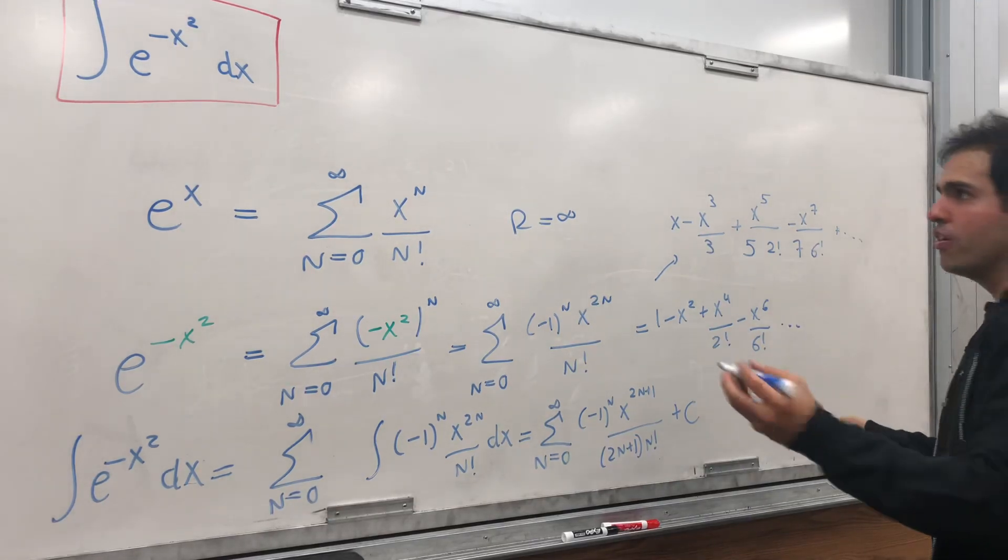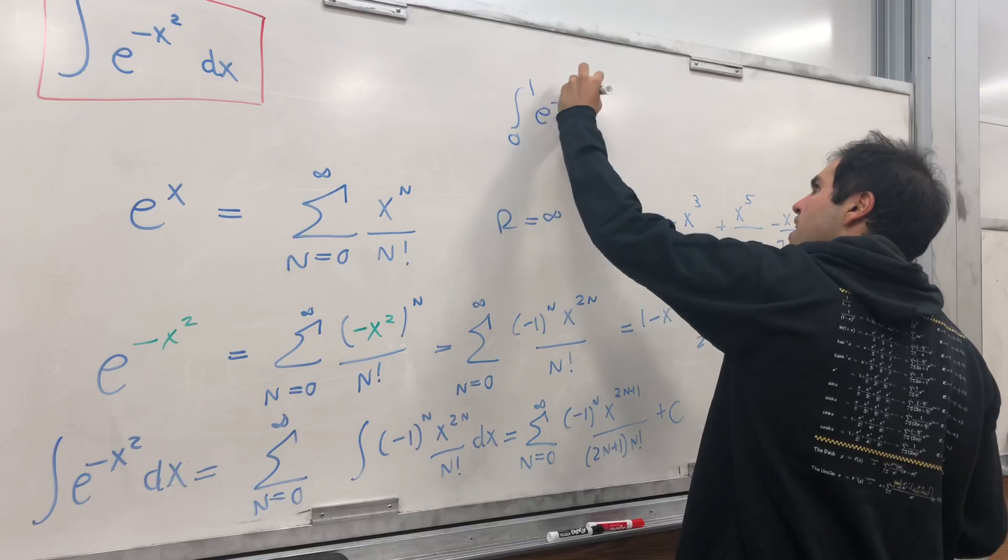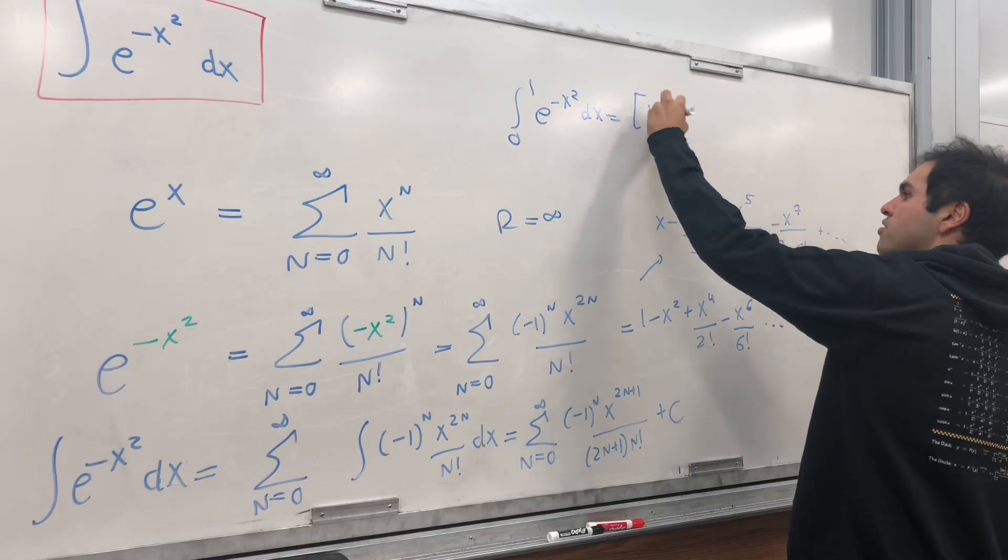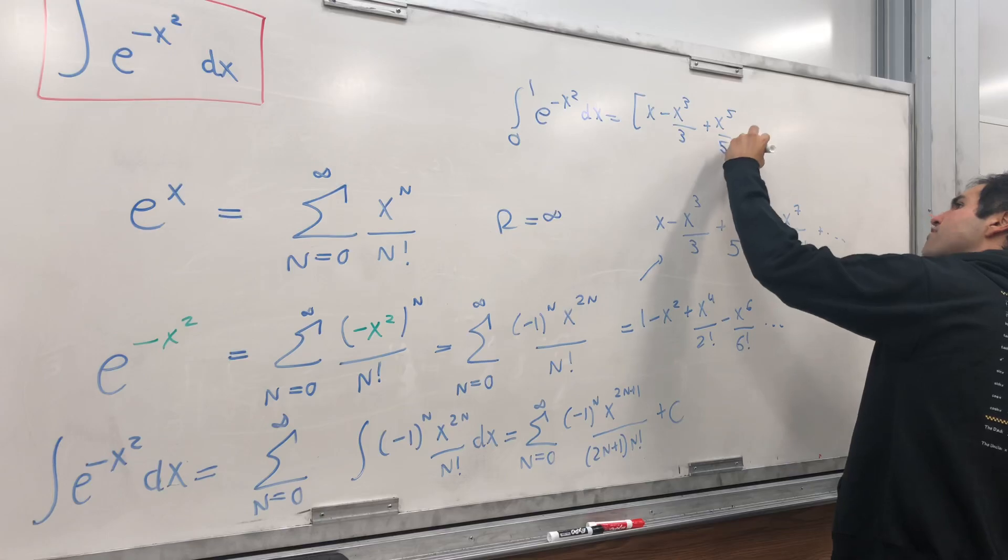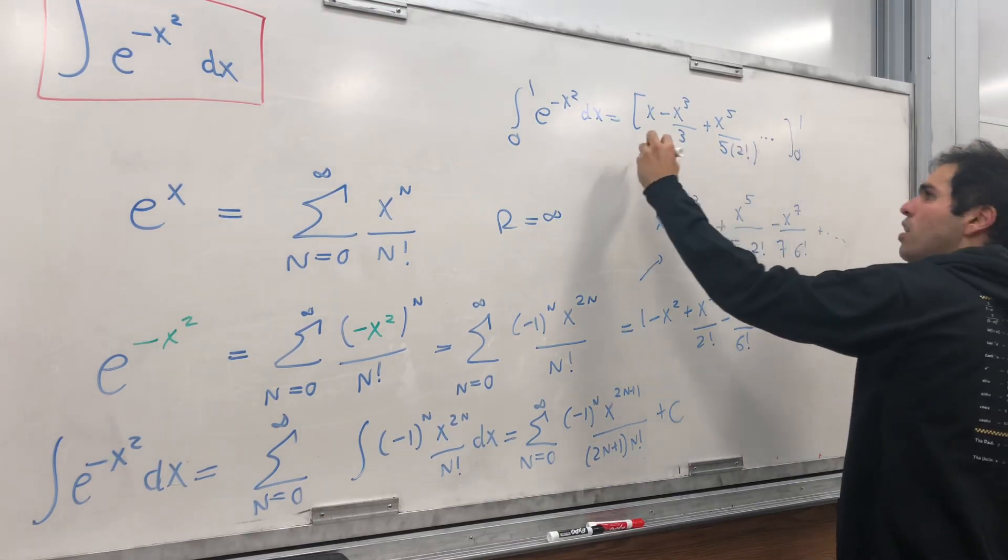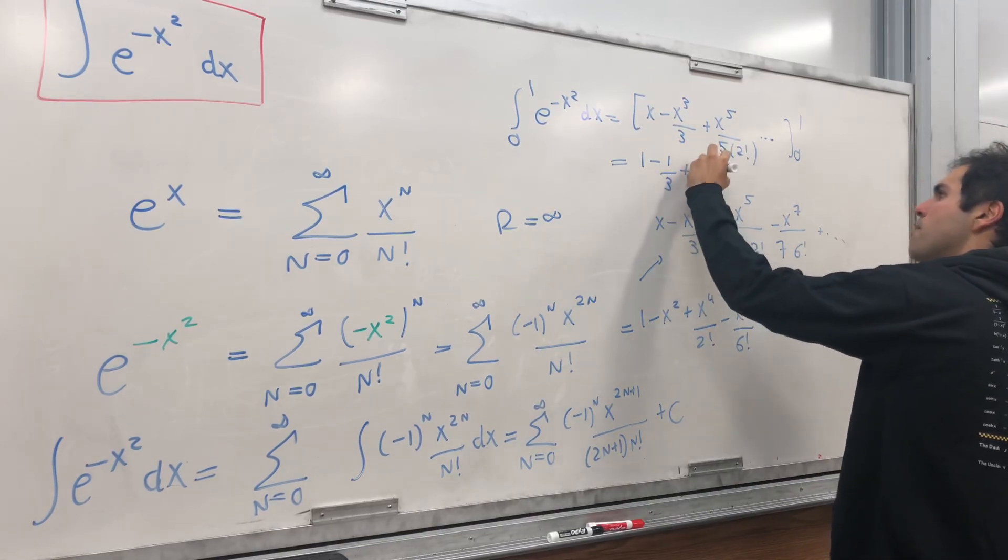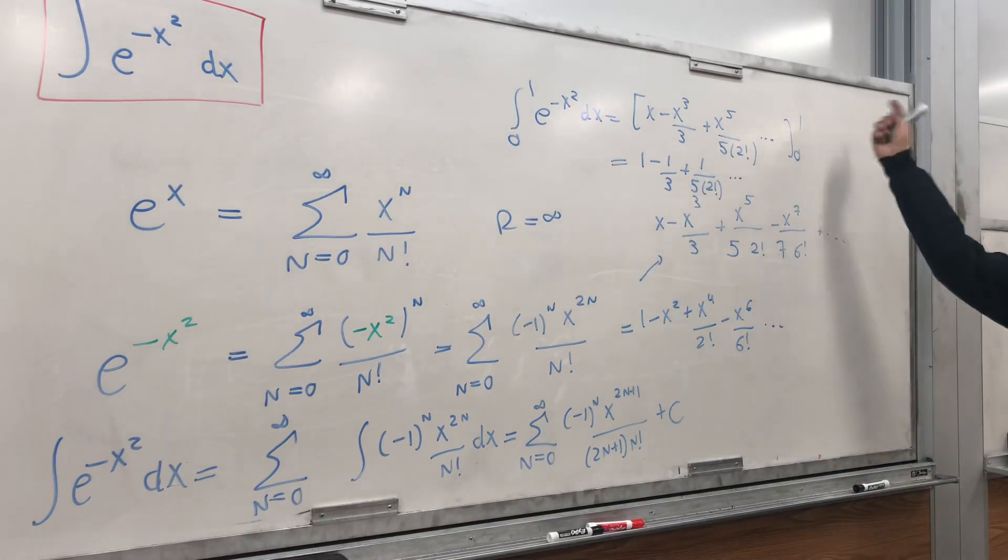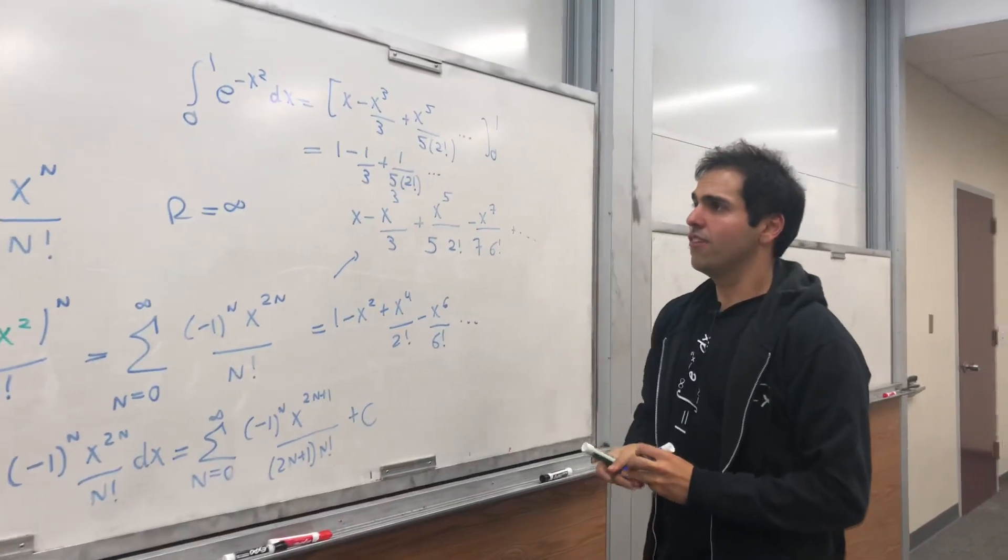And in particular, to evaluate the integral from 0 to 1 of e of negative x squared dx, you can just use this antiderivative, x minus x cubed over 3 plus x to the 5th over 5 times 2 factorial, and so on, from 0 to 1. And at 0, everything is 0, so it's 1 minus 1 third plus 1 over 5 times 2 factorial, and so on. And the more terms you use, the better approximation you get for that integral.